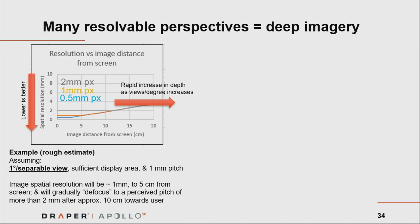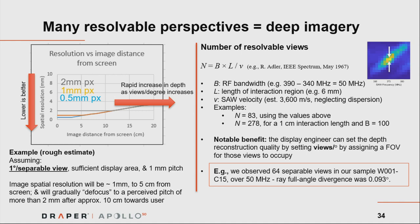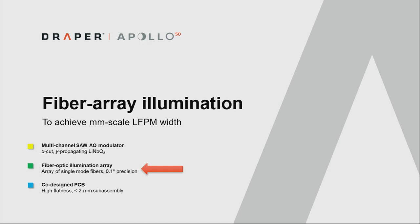The lovely thing about surface acoustic wave AOMs is that you can get a very high number of separable views, depending on just a few easy-to-achieve parameters: the RF bandwidth driving the device, the length of the region in which waveguided light interacts with the surface acoustic wave, and the speed of that surface acoustic wave. For example, you can get 83 views out of a single pixel simultaneously, or close to 300 if the interaction length is a centimeter instead of several millimeters. One of the very first chips we made showed 64 separable views with a full-angle divergence of less than one-tenth of a degree.